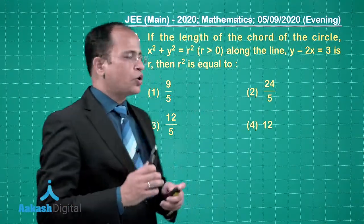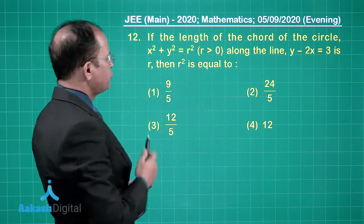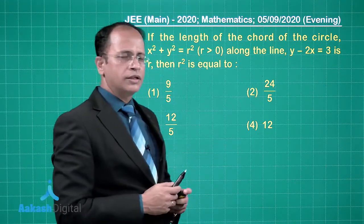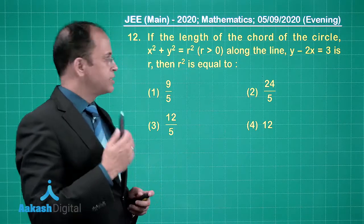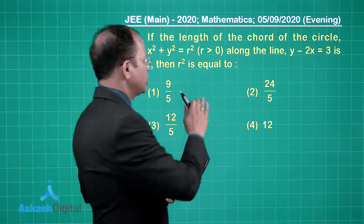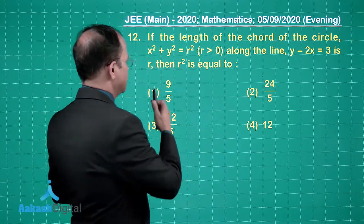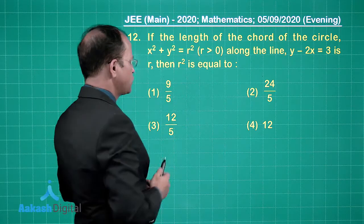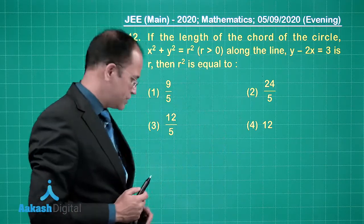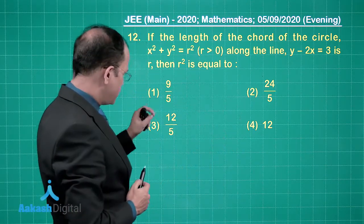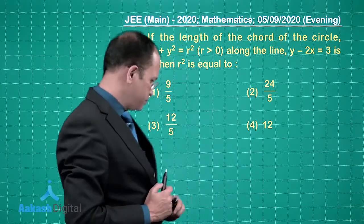Now let us talk about question number 12. If the length of the chord of the circle x² + y² = r² (where r > 0) along the line y - 2x = 3 is r, then r² equals — options are 9/5, 12/5, 12, and 24/5.